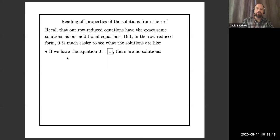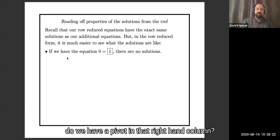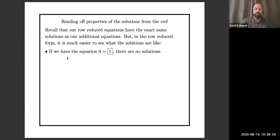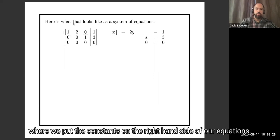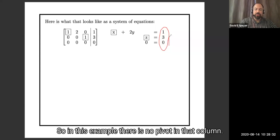So the first question, the first thing to do is to look and see, do we have a pivot in that right-hand column, in the column where we put the constants on the right-hand side of our equations. So in this example, there is no pivot in that column.